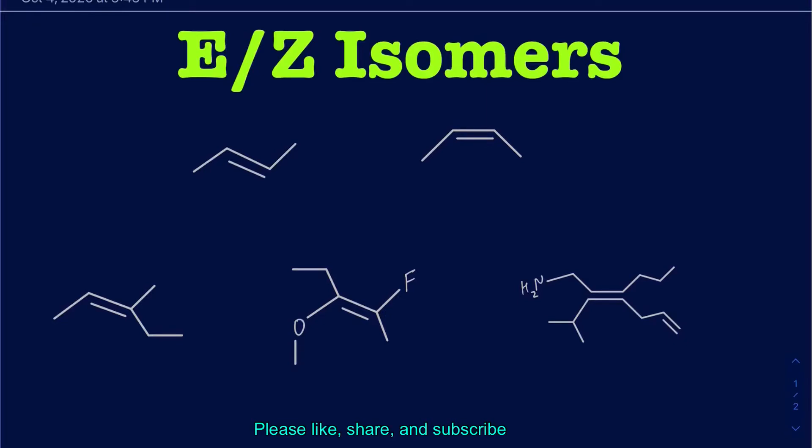Hello everyone, in this video we're going to be talking about how to determine if a given alkene is going to be an E or a Z isomer, and we'll briefly talk about cis and trans as well.